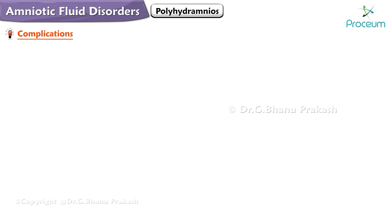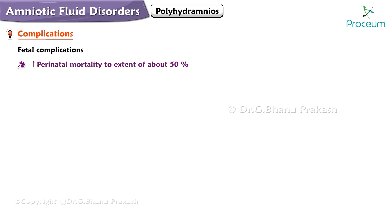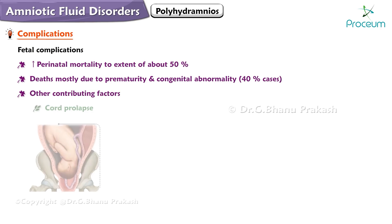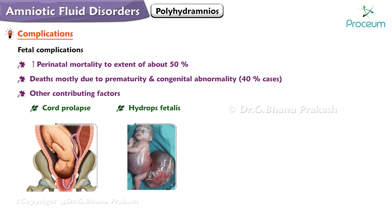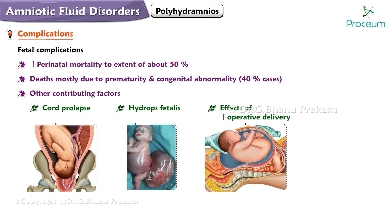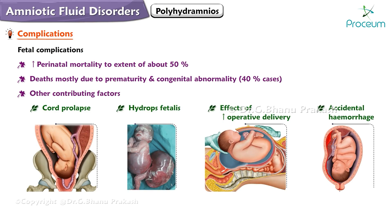Lastly, here are the fetal complications. There is increased perinatal mortality to the extent of about 50%. Deaths are mostly due to prematurity and congenital abnormality, accounting for 40% of cases. Other contributing factors are cord prolapse, hydrops fetalis, the effects of increased operative delivery, and accidental hemorrhage.